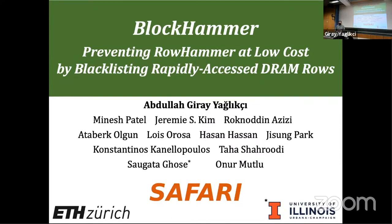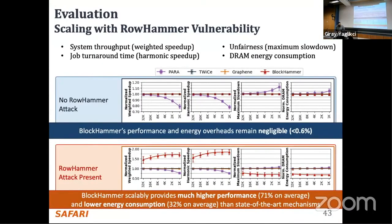A question from the audience: even with a 1,000 hammer threshold, BlockHammer shows almost no slowdown. Prior Rowhammer papers mention some benign workloads that almost naturally exhibit Rowhammer-like behavior. The presenter responds that it highly depends on how you configure the system. For a benign application to reach the hammer count, the row buffer locality would need to be terrible. The analysis uses a state-of-the-art configuration with interleaving at cache-line granularity and minimalistic open page policy to improve row buffer locality. Under this configuration, none of the tested benign applications reach the Rowhammer threshold.